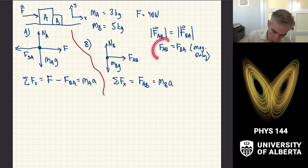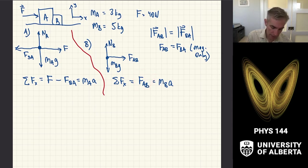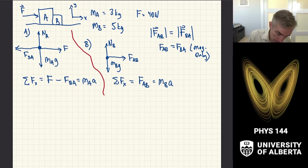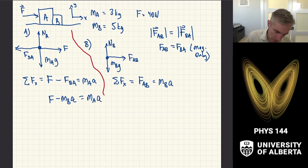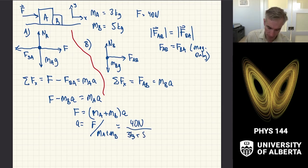I'm going to use the equivalence of F_AB and F_BA since those two magnitudes are equal. Substituting, I get F minus M_B times acceleration equals mass A times acceleration. Solving: force equals (mass A plus mass B) times acceleration, so acceleration equals force over (M_A plus M_B) = 40 newtons over (3 + 5) kilograms = 5 meters per second squared.